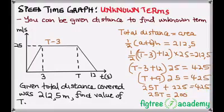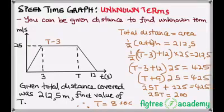This equals to 425. Then I will take 225 to the right side. It will be subtracted, 425 minus 225. I will remain 200. So 25T equals to 200. Divided by 25 both sides. This means my T equals to 8 seconds. So that's how you can find unknown terms.